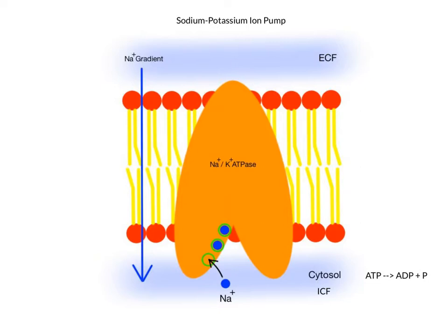Normally, most sodium ions are concentrated outside of the cell in the extracellular fluid, the ECF. Most potassium ions are found in high concentrations within the cell's cytosol, also called the intracellular fluid, the ICF.